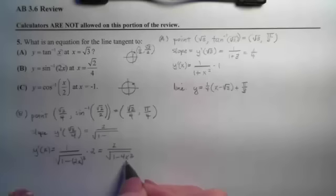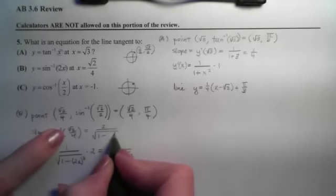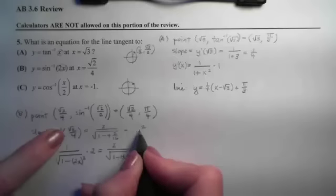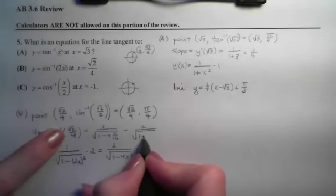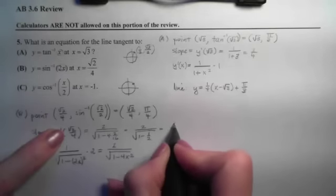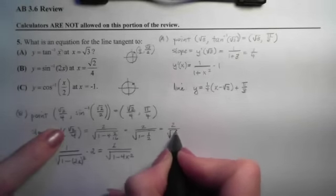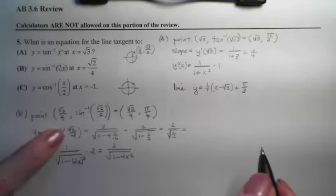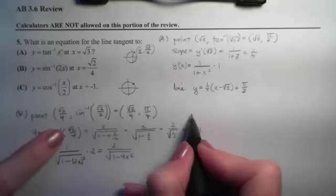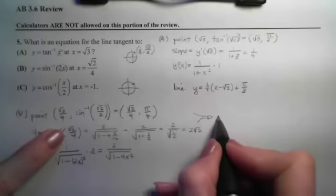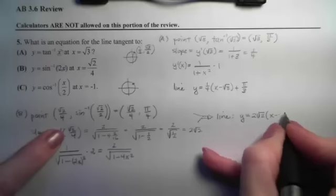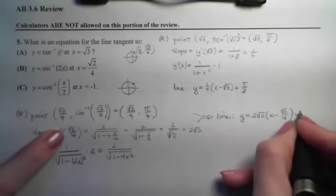Plugging into the derivative to find the slope: we have 2 over the square root of (1 minus — squaring root 2 over 4 gives 2 over 16 — then multiplying by 4 gives 8 over 16, which is 1/2). So inside the radical on the bottom I have the square root of 1/2. Dividing by that radical is the same as multiplying by its reciprocal, so I end up with a slope of 2 root 2. Now with the point and the slope, I can write the equation of the line: y equals the slope times (x minus the x-coordinate) plus the y-coordinate.